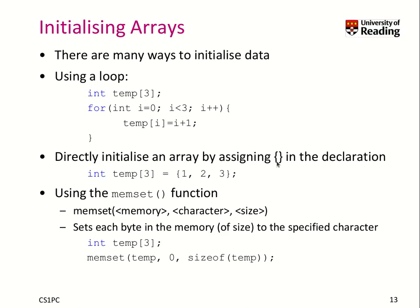You can also directly initialize an array by assigning values using curly brackets in the declaration. Here we have temperature with three elements and we say the three elements are 1, 2, and 3. There is also the memset function, which you can use to initialize every byte of this object with a specific value. Here we assign to the temp array the value 0, using sizeof(temp) — which is 3 times 4, typically 12 bytes — all set to 0.